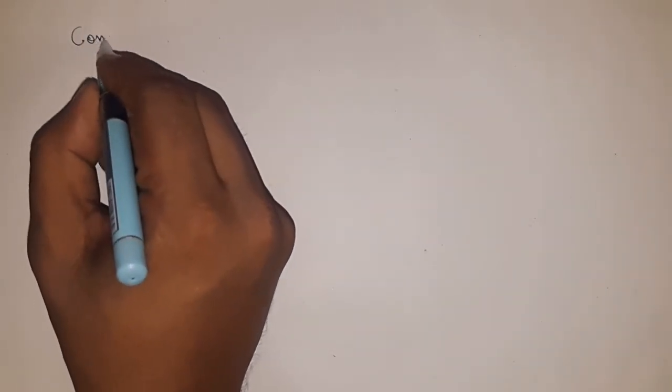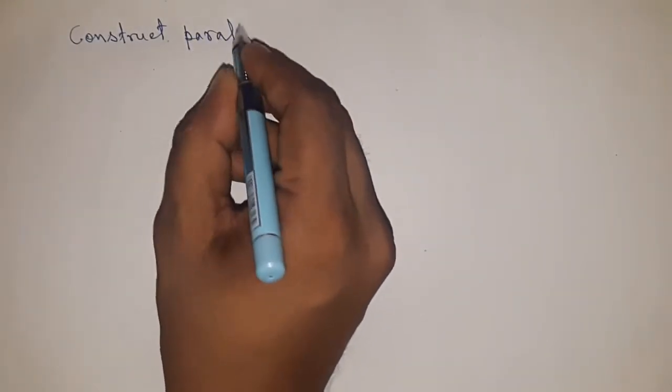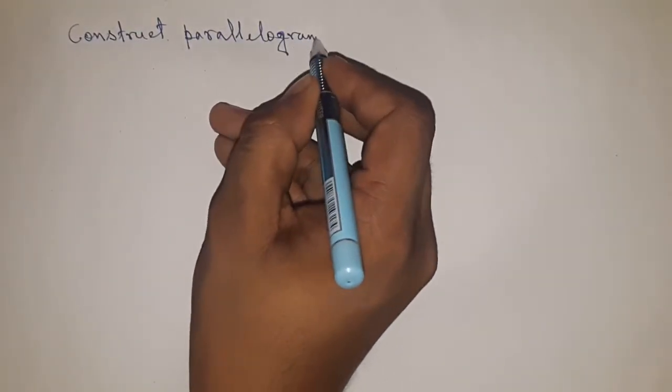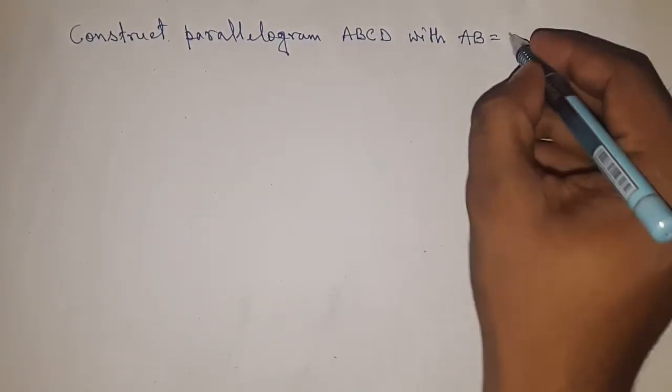Hi everyone, welcome to SSR classes. Today talking about the construction of parallelogram ABCD with length 8 centimeter and 5 centimeter and an angle 75 degrees.